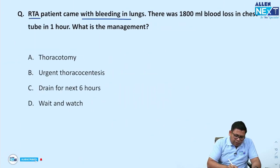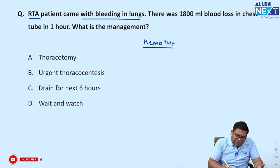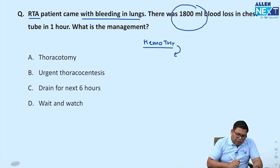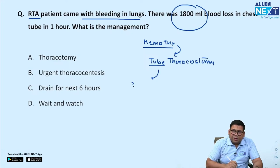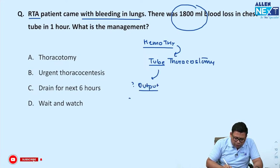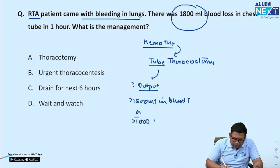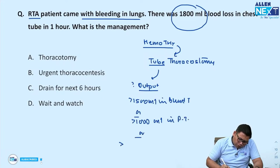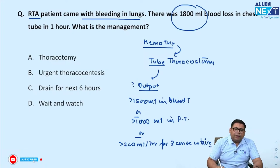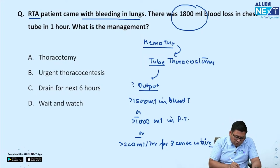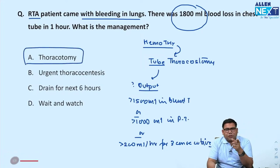A patient came with bleeding in the lungs — this is an RTA patient with haemothorax. 1800 ml of blood was lost through the chest tube. For haemothorax, the strategy is tube thoracostomy. If output is more than 1500 ml in blunt trauma, or more than 1000 ml in penetrating trauma, or more than 200 ml per hour for three consecutive hours, this is an indication for urgent thoracotomy — not thoracostomy. At 1800 ml, thoracotomy should be the answer.